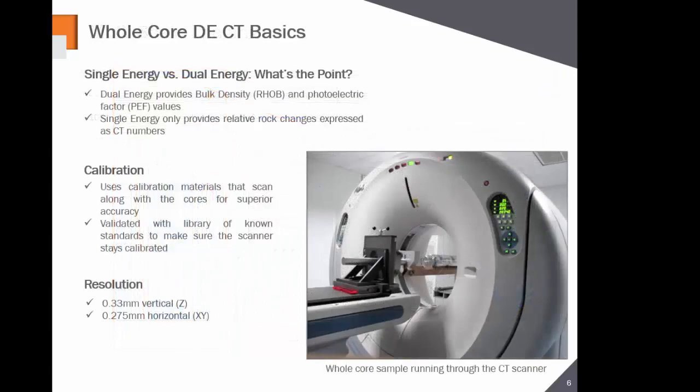We'll start with the whole core scale and basics on whole core CT. This technique was not invented by my company — it was first researched at Shell in the early 1980s, applying dual energy scanning very early on. It wasn't commercial because they hadn't calibrated it well, primarily due to technology limitations. About 2008, technology had caught up and we could actually calibrate and compute properties from whole core CTs very rapidly at a very fine scale.